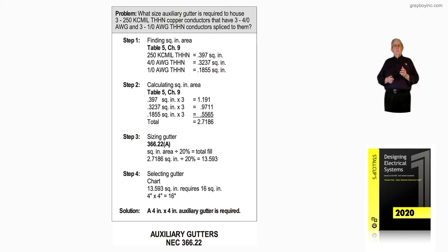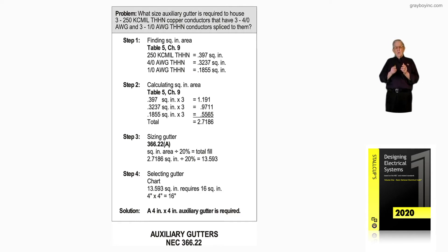Step one is going to Table 5 and based upon THHN and the size conductors that you see in the illustration, we come up with a cross-sectional area of each conductor based upon the size of the conductor, the insulation of the conductor, and the material of the conductor, which is copper in this case.